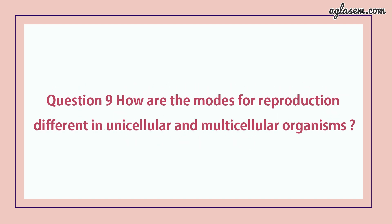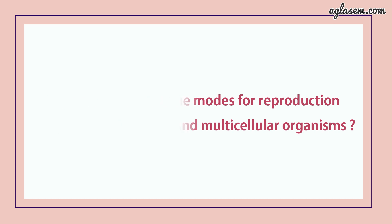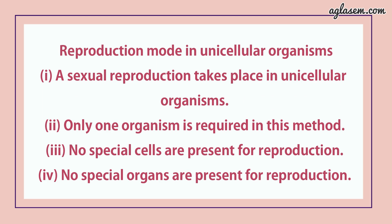Question number 9 says: how are the modes of reproduction different in unicellular and multicellular organisms? Answer: first, let's talk about reproduction in unicellular organisms. Here, asexual reproduction takes place. Only one organism is required in this method. No special cells are present for reproduction, and no special organs are present for reproduction.